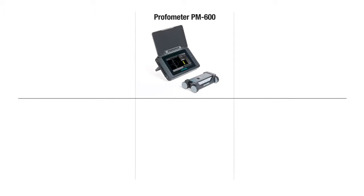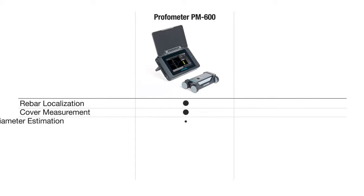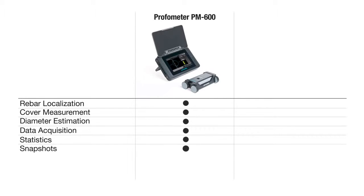The functions of the ProFormator PM600 include rebar localization, cover measurement, diameter estimation, data acquisition, statistics and snapshots.